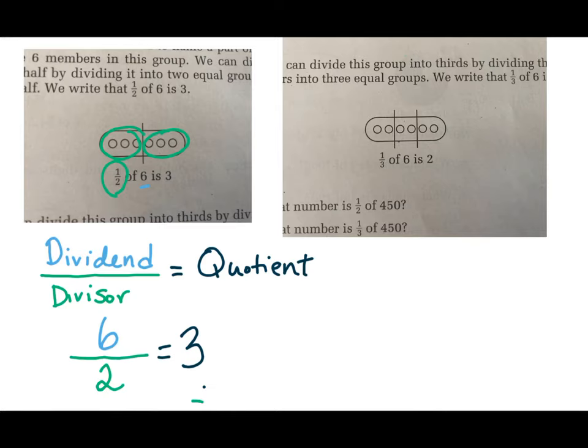Remember that in a fact family, we can swap these two factors. So in this case, now we have six and we're dividing it into three equal parts. One, two, three parts. And that gives us two pieces in each part.